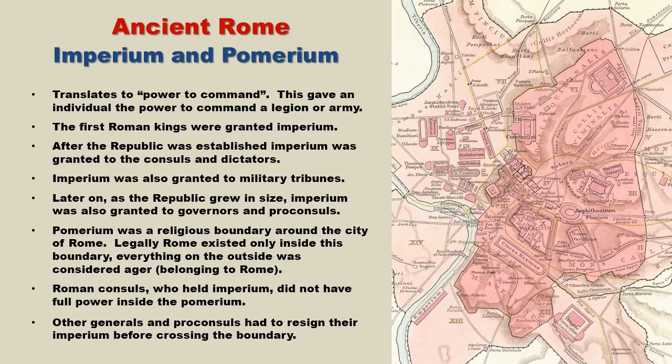According to legend, it was Romulus who originally laid down this boundary. Later on, it was expanded by Sulla. Since this area was considered sacred, weapons were strictly prohibited. So how does this relate to Imperium? If you were a Roman general or governor and you wanted to go inside the Pomerium, you were required by law to stand down — essentially, you had to resign your Imperium.